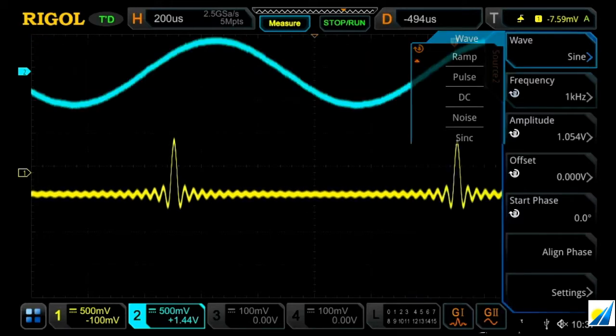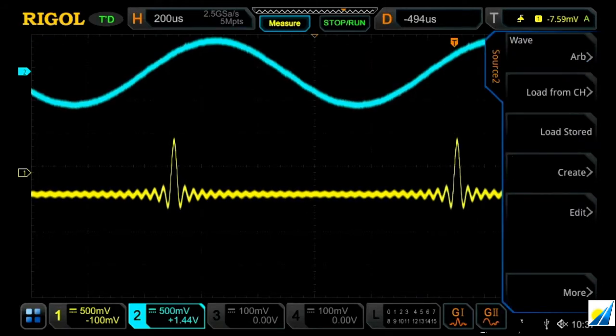If we go ahead and click on this, it brings up our menu. And with this, we can actually choose a couple of different options to load an arbitrary waveform file. We can choose to load one of the analog channels, load a stored waveform, or create our own and then edit them.